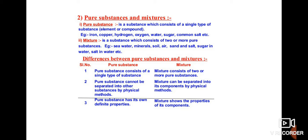Pure substances cannot be separated by physical methods, but we can separate mixtures into their components by physical methods. Pure substances have their own distinct properties, whereas mixtures will show the properties of their components.